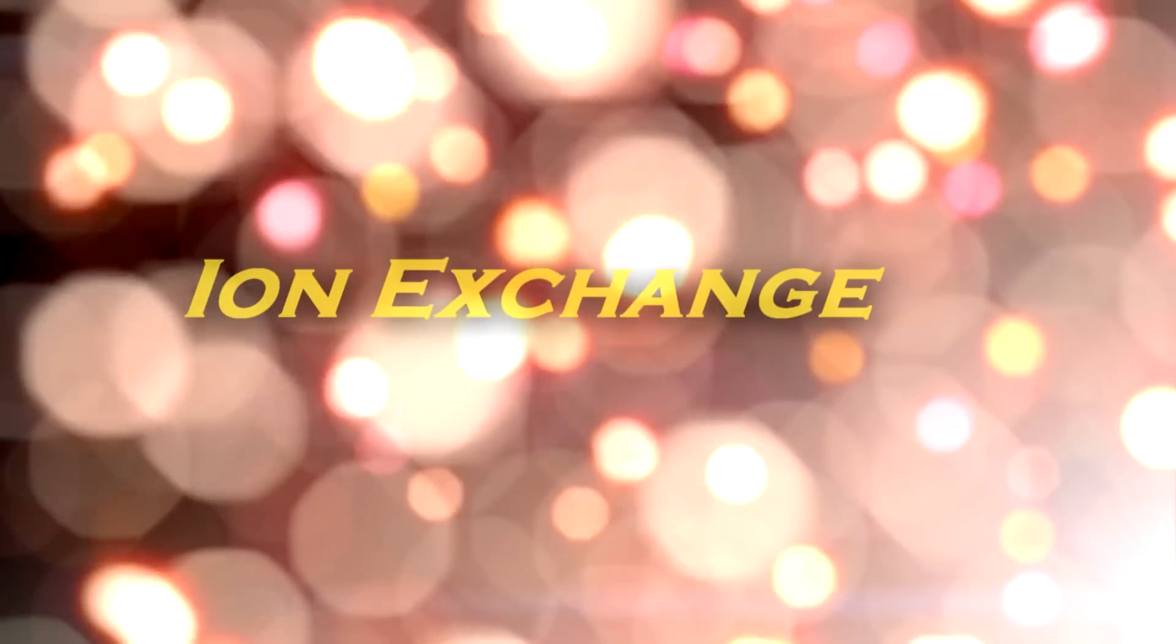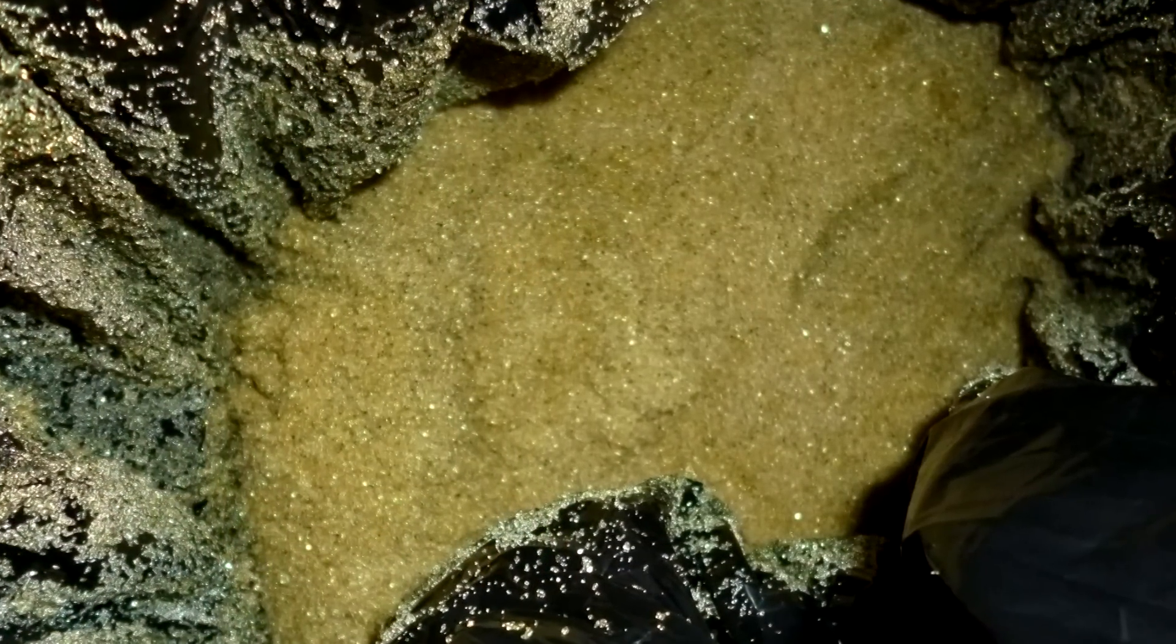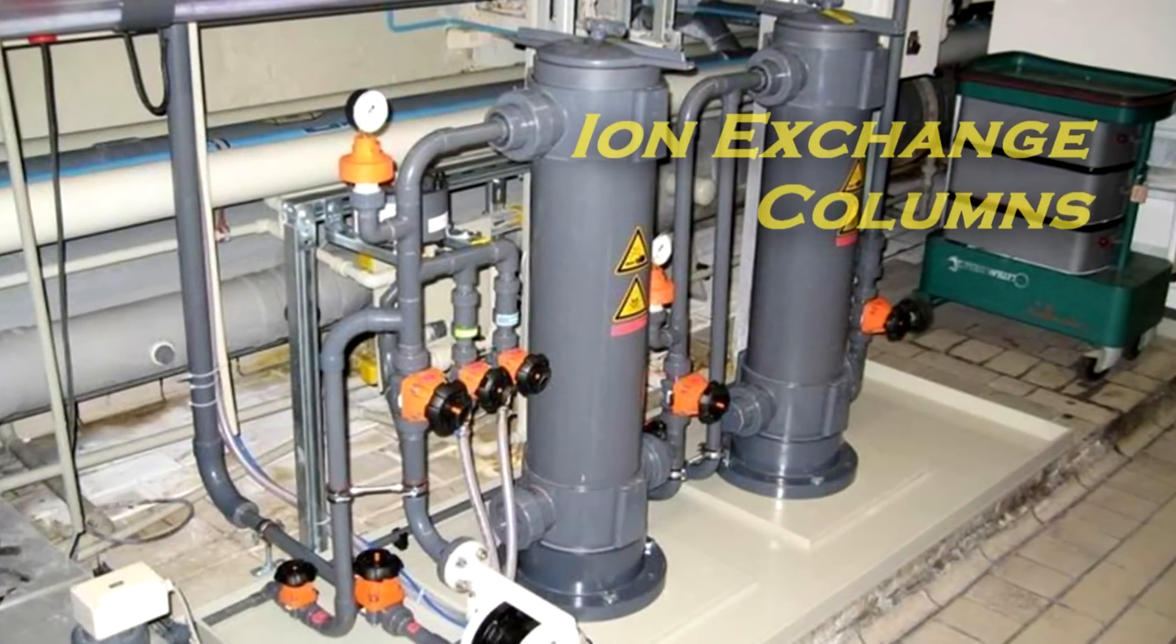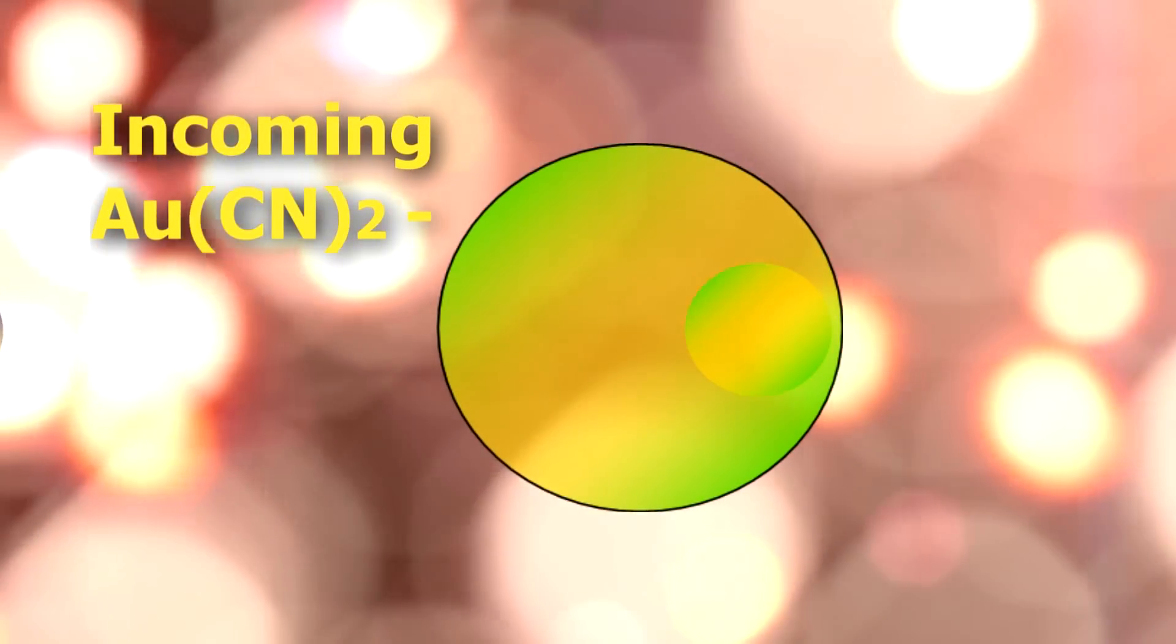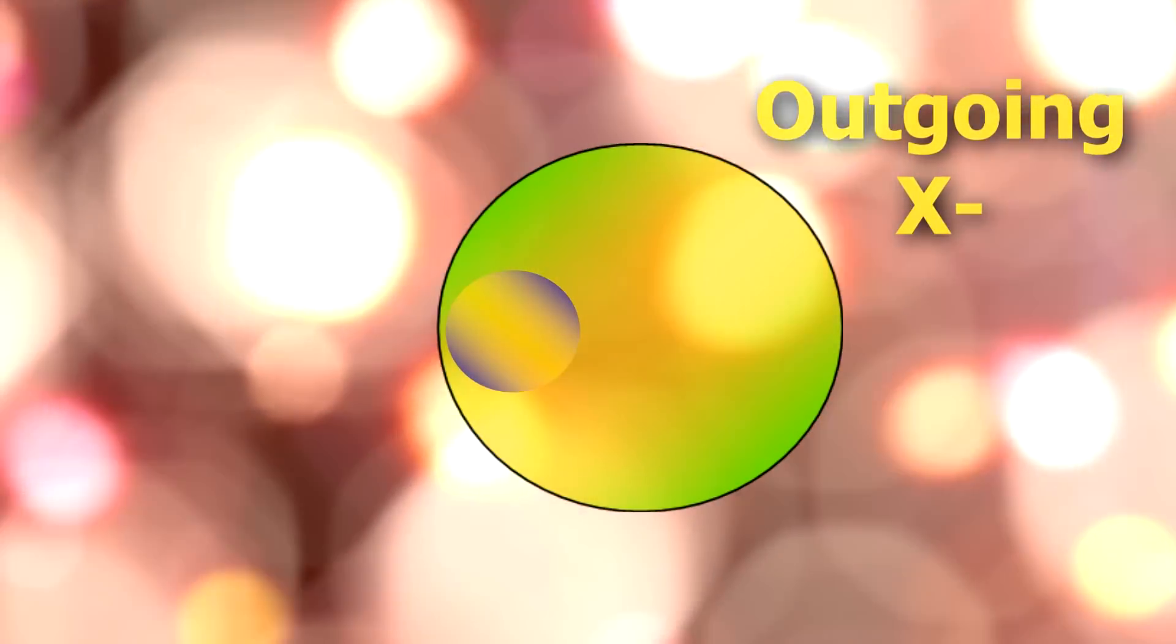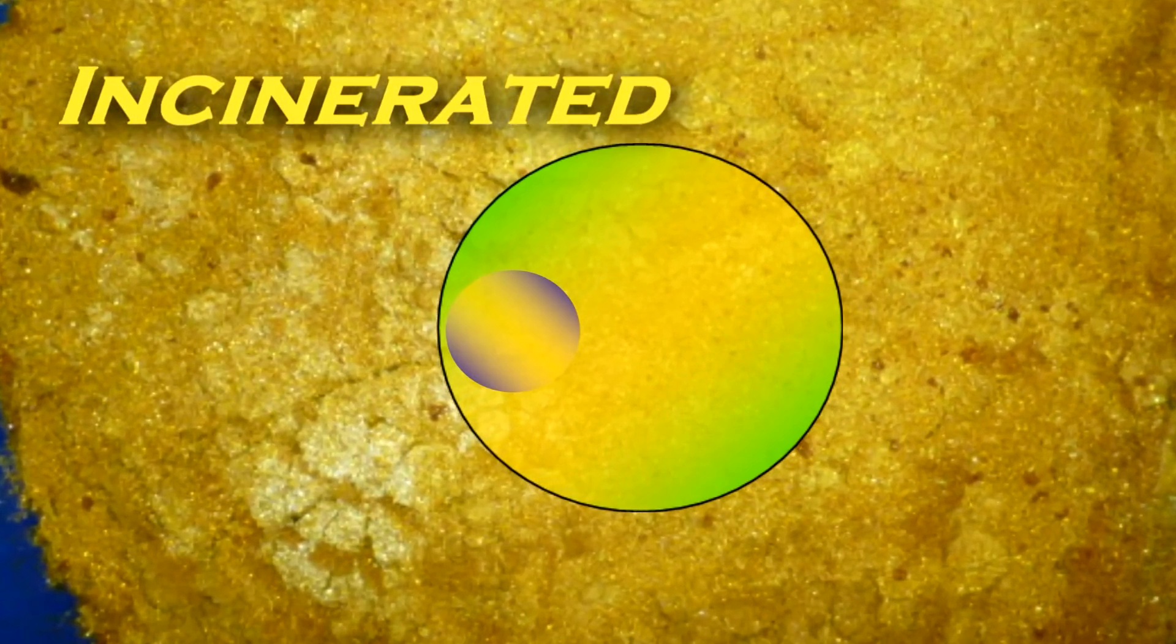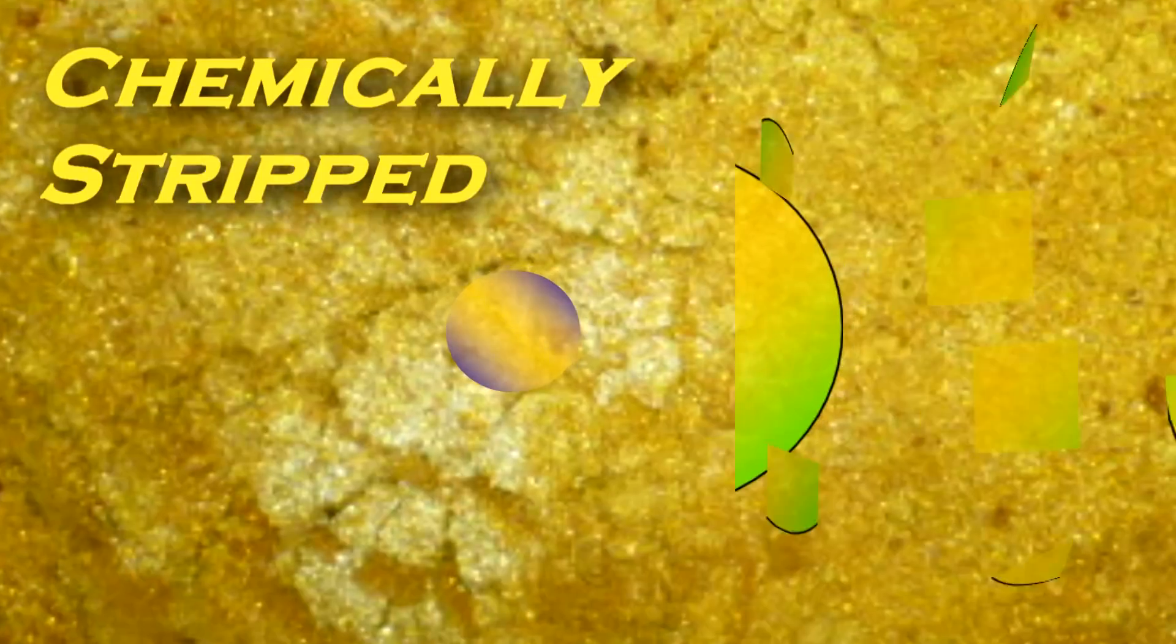Ion exchange is a process that uses small polymer beads that are chemically tailored to selectively collect precious metals from a solution. The precious metal ions exchange places with other ions in the polymer to accomplish this. The polymer carrier will eventually be incinerated or chemically stripped, leaving the collected precious metals concentrate.